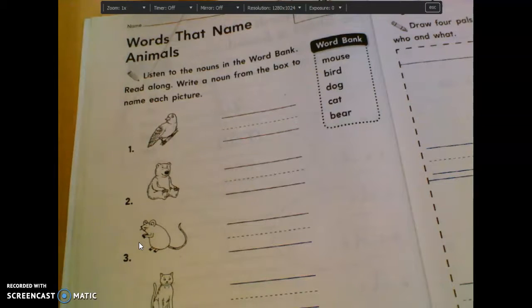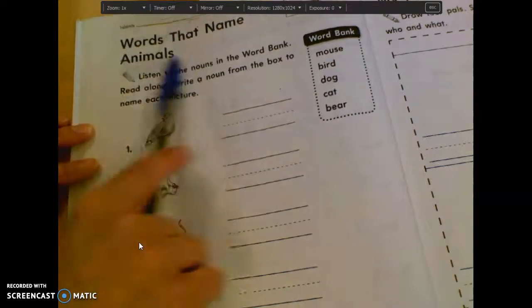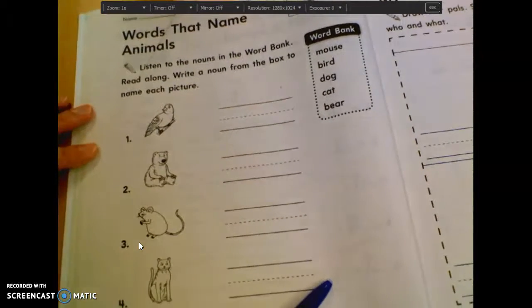Parking lots. Good. That might even be, well, I guess that could be a place or a thing. That's true. Good. And then also animals are nouns too. So on this page, we're going to look at some different animals that are nouns.